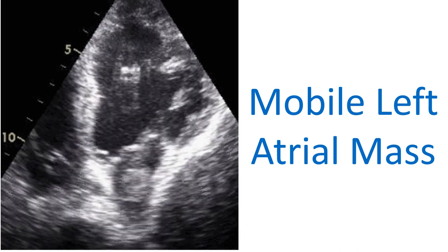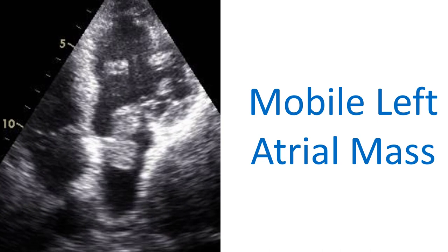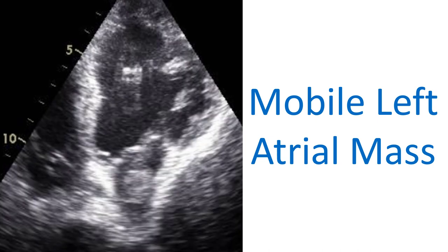Sequential still images follow. The mass is seen across the mitral valve in the apical 4-chamber view. The mass has started retracting into the left atrium at the end of diastole. Now the mass is almost in the left atrium as systole is starting.